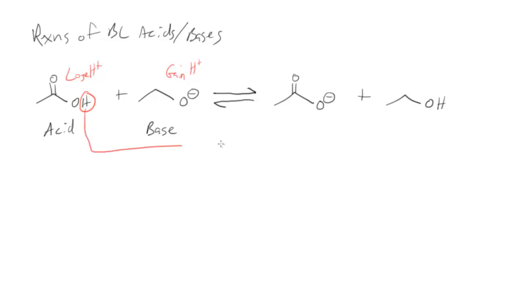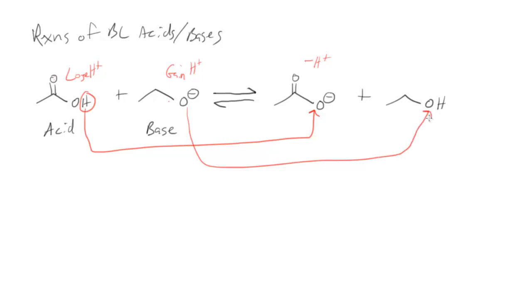Looking at these pairs: I start with acetic acid, minus H+, and I have my ethoxide that I started with, now with an extra H+. So when I look at these pairs, I start with an acid, and this one has a negative charge now — this is the base, but we call this the conjugate base of the starting acid. Acetic acid is the starting acid; acetate is the conjugate base of that acid.